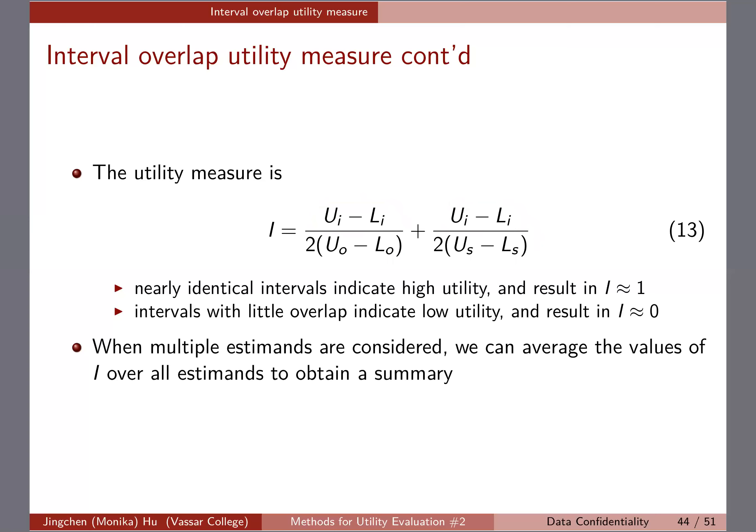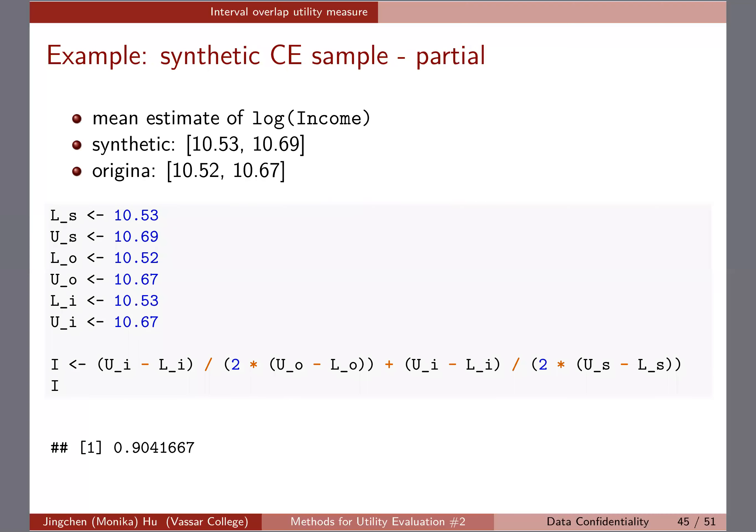For the example that we did—we did two examples—I'm just going to walk through them. You have to supply all the values: L_s, U_s, L_o, U_o, and also L_i and U_i. Then you do the I measure. For the first one that we did last Tuesday, we had the synthetic partial synthesis where log expenditure and log income is synthesized from the simple linear regression models.